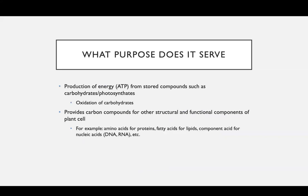So what purpose does respiration serve in the plant? It has two primary purposes. First, production of energy or ATP from stored compounds such as carbohydrates and photosynthates — through the oxidation of your carbohydrates, that's how you get that energy. Second, it provides carbon compounds for other structural and functional components of the plant cell — building blocks for cell synthesis, like amino acids for proteins, fatty acids for lipids, and component acids for nucleic acids, that's for your DNA and RNA.